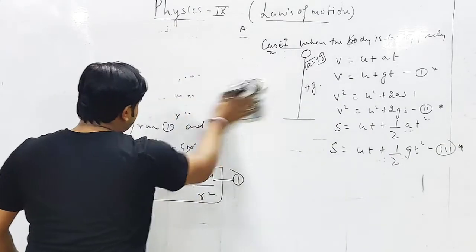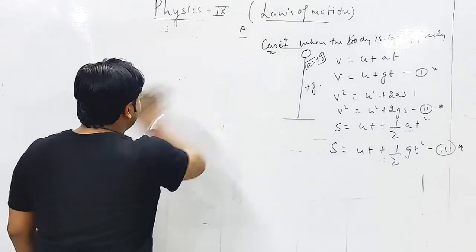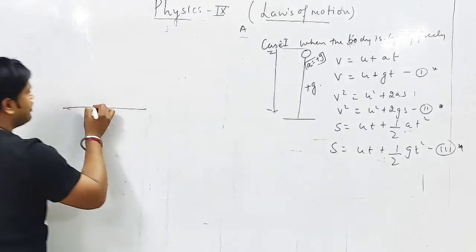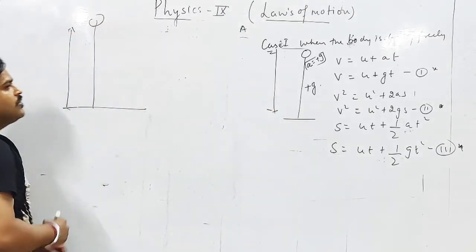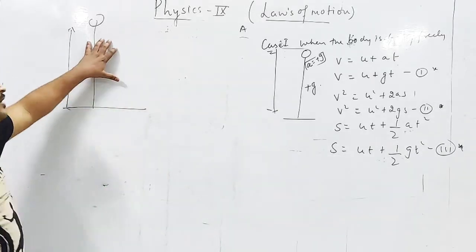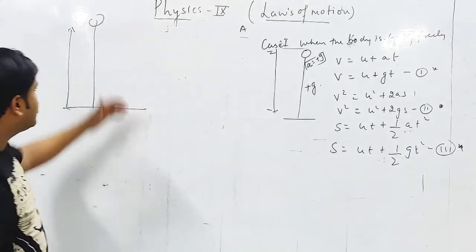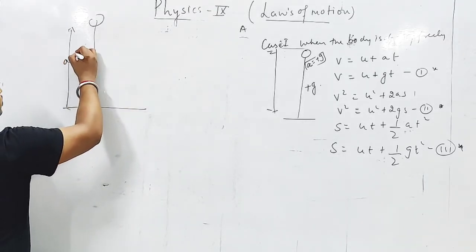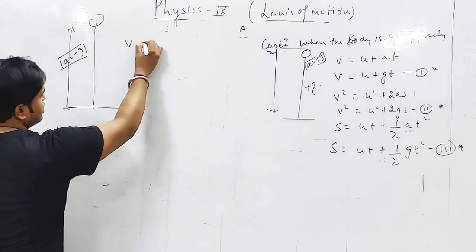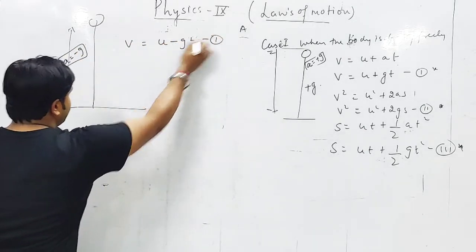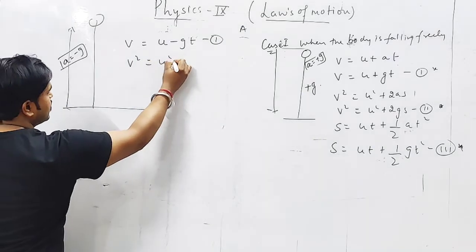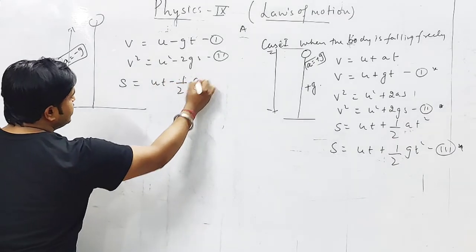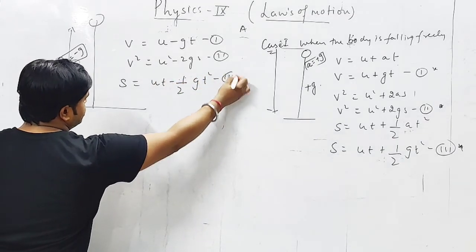Last part, when the body is thrown vertically upward. When we throw the object vertically upward, then object's acceleration due to gravity becomes minus g in terms of the equations. Equation will be v equals u minus gt. v square is equal to u square minus 2gs, second equation. And third s is equal to ut minus half gt square. This is your third equation.